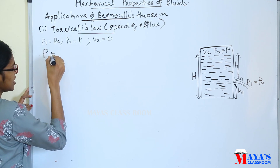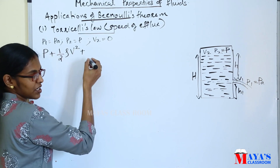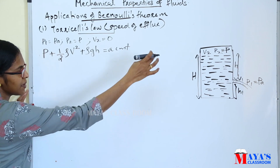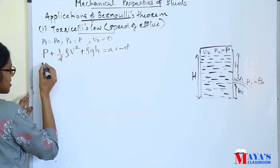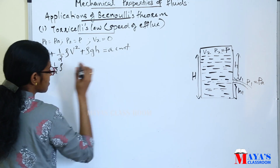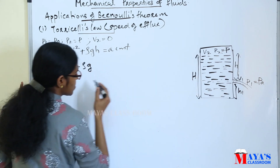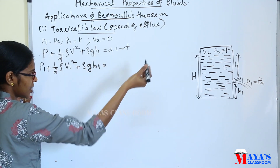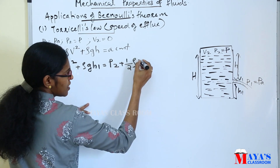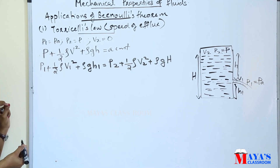We are applying Bernoulli's principle: the pressure energy, kinetic energy per unit volume, and potential energy per unit volume remain constant. So on the left side we write: P1 plus half rho V1 squared plus rho g H1, and on the right side: P2 plus half rho V2 squared plus rho g H.